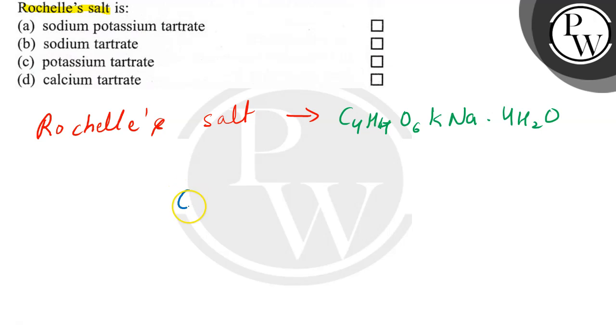it is C, C, C and C. This is ONa, here OK, here double bond O, here OH, here OH and here also double bond O. So this is the formula for Rochelle's salt and its name is